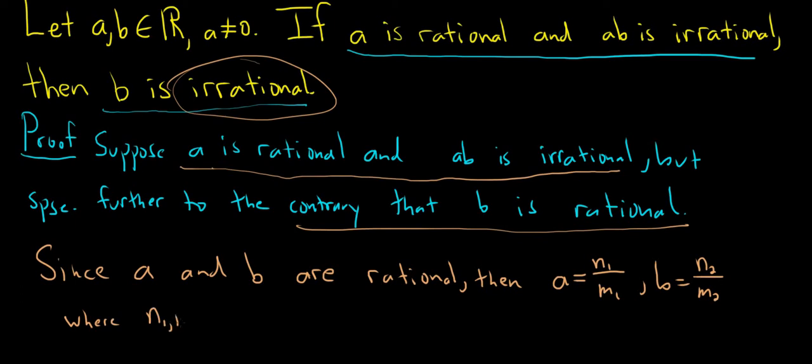N1, M1, N2, M2 are integers and M1 is not equal to 0 and M2 is not equal to 0. That's what it means for those numbers to be rational.